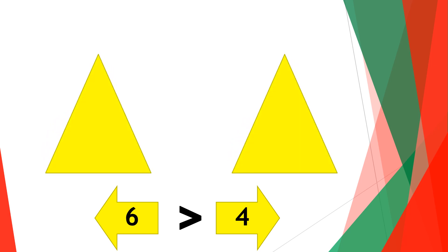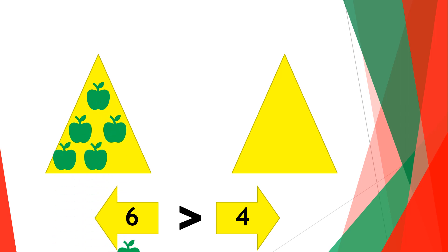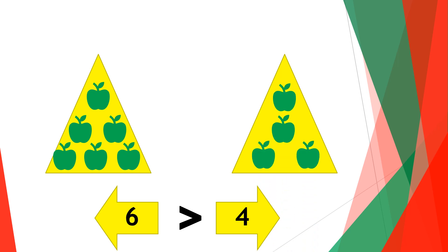If you pour six apples on one side and four apples on the other side — one, two, three, four, five, six and one, two, three, four — this means that six apples is more than four apples, and that clearly shows six is greater than four.